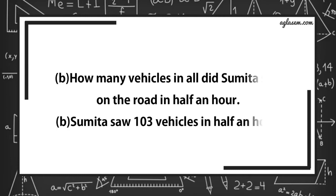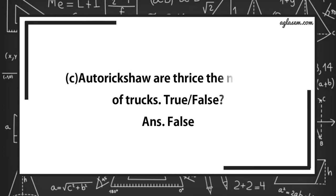Further, how many vehicles in all did Sumita see on the road in half an hour? Answer is, Sumita saw 103 vehicles in half an hour. Auto rickshaws are thrice the number of truck. True or false? Answer is, false.